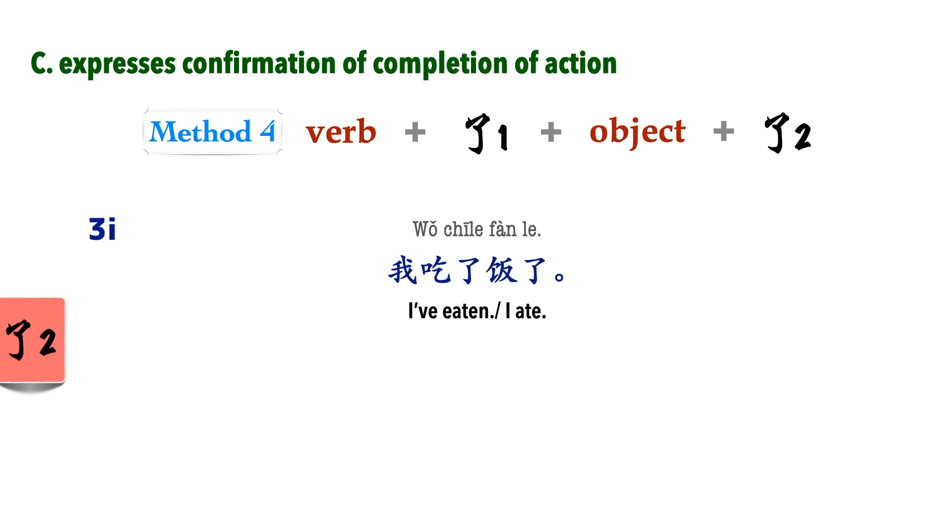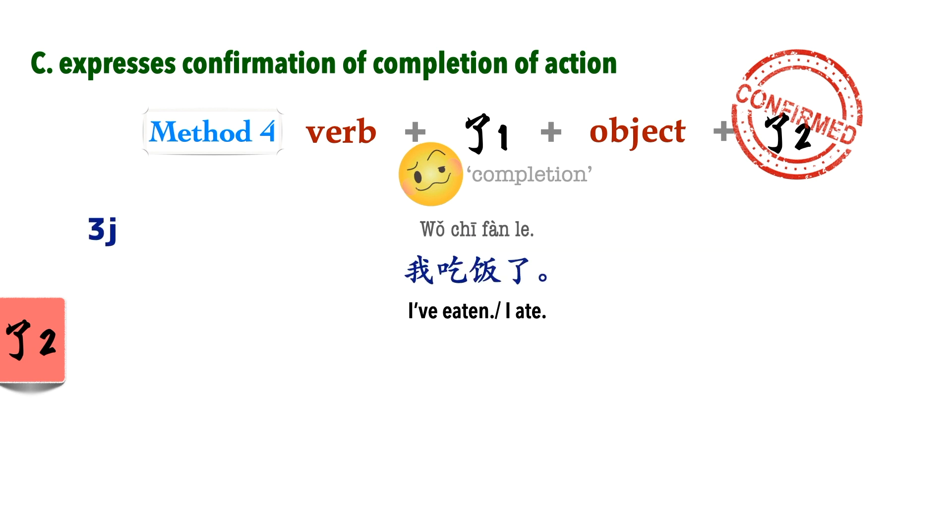我吃了饭了. That means, in this sentence, we have both 了1 and 了2. So ironically, although 了1 indicates completion, it does not complete the sentence well on its own. As I said before, 了1 expresses completion but does not necessarily mean that the action is really complete. 了2 gives a final confirmation that the action is complete. Actually, in such short sentences, 了1 can be and is often omitted. So we can simply say, 我吃饭了.